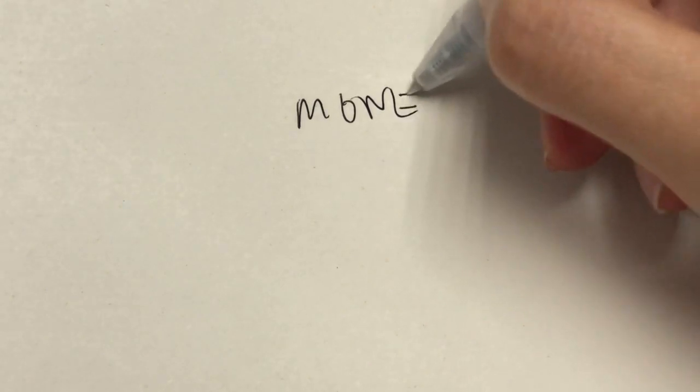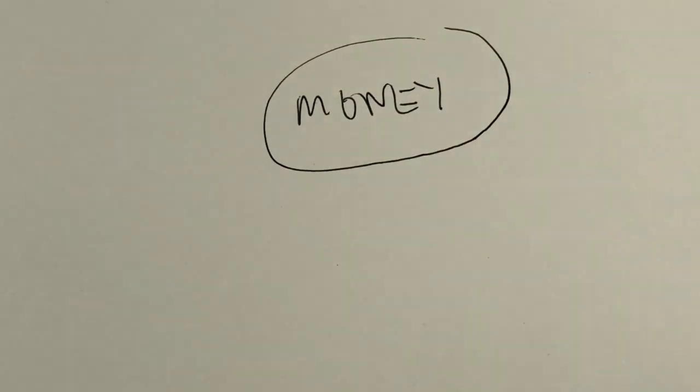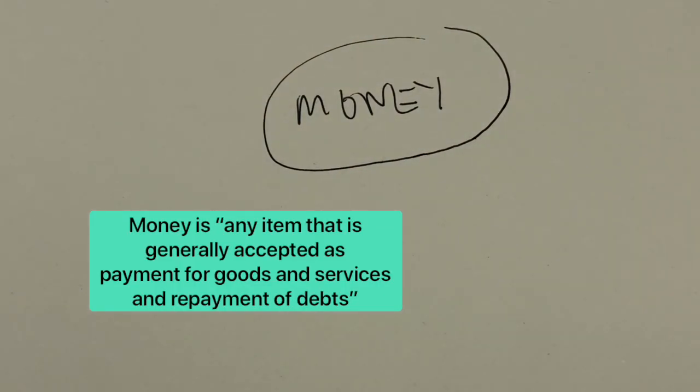Before we begin, let's talk about money. What do you understand about money? Money is basically anything that is accepted as a medium of exchange. Before money existed, the alternative to using money is the barter system, where people exchange goods and services for other goods and services directly.